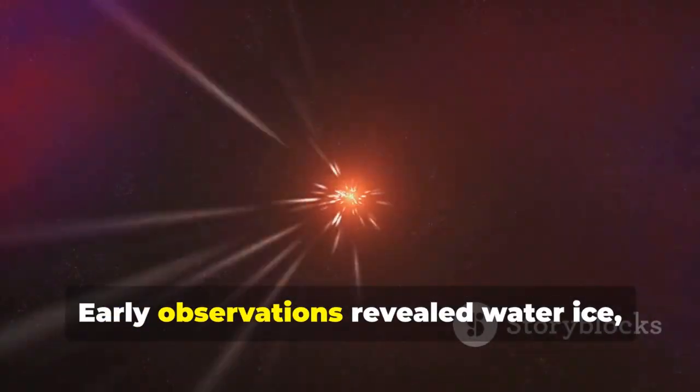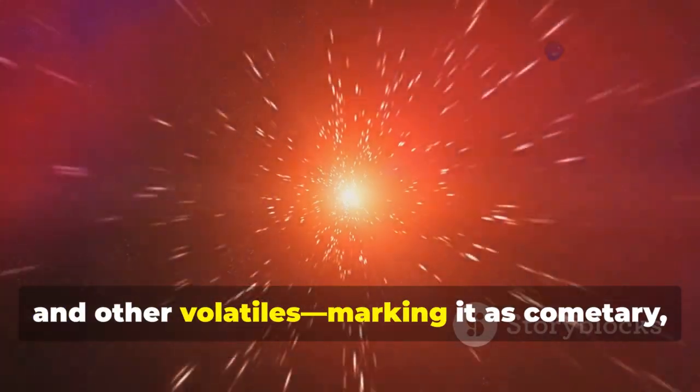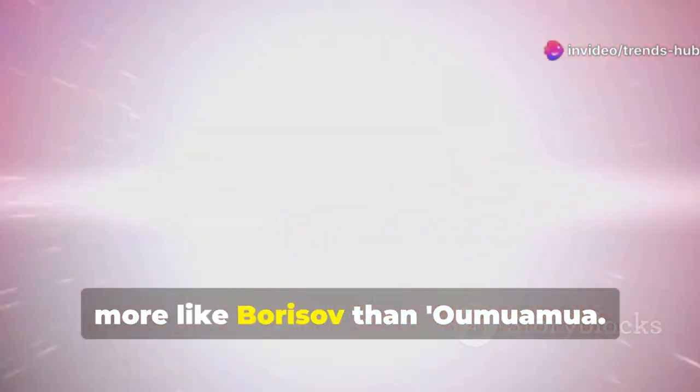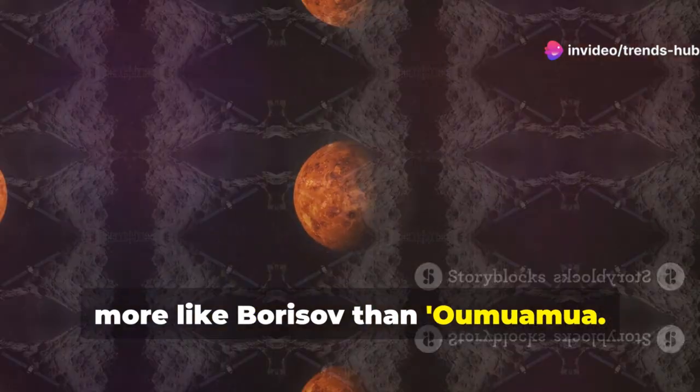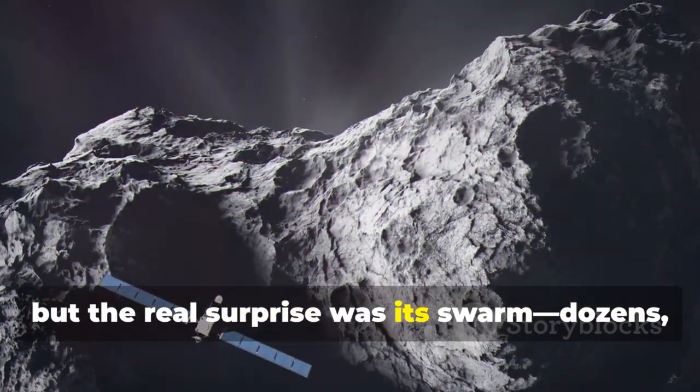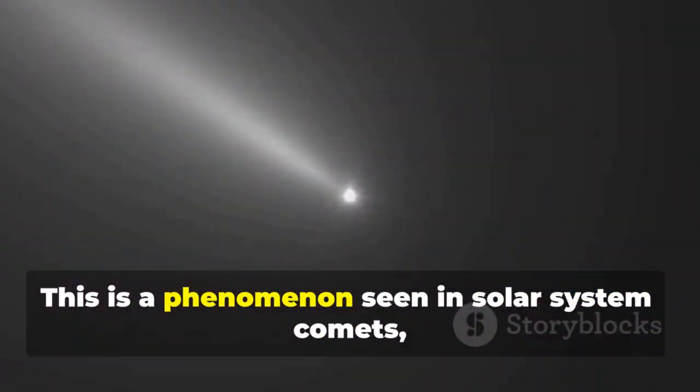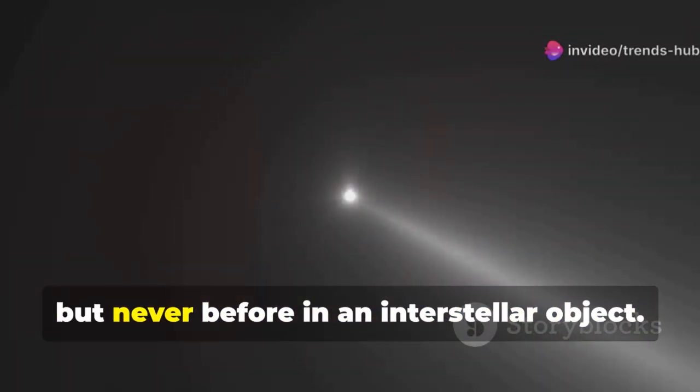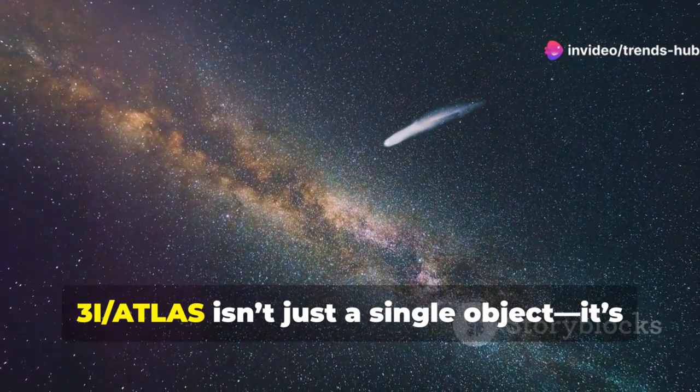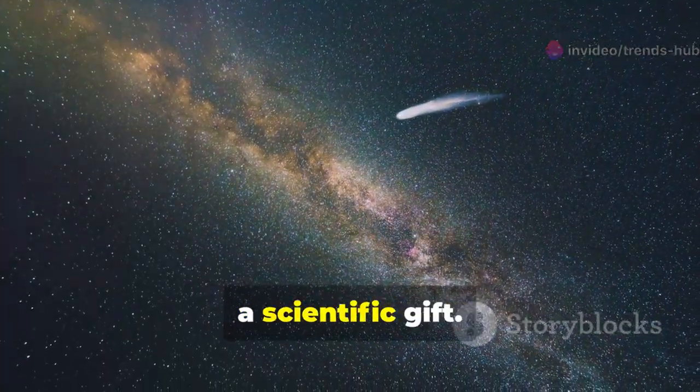Early observations revealed water ice, carbon monoxide, and other volatiles marking it as cometry, more like Borisov than Oumuamua. Its nucleus is about two kilometers wide, but the real surprise was its swarm, dozens, maybe hundreds, of smaller fragments traveling with it. This is a phenomenon seen in solar system comets, but never before in an interstellar object. 3i-slash-Atlas isn't just a single object, it's a complex system, a scientific gift. Its discovery marks a new chapter in our study of the cosmos.